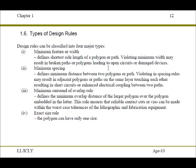The layout designer must follow the design rules to guarantee a certain yield for the fabricated microchip. The design rules from vendor A and vendor B are different, but the types of design rules, regardless of the manufacturer, tend to be the same. The four basic types are: the minimum feature or width, the minimum spacing rule, the minimum surround or overlap rule, and the exact size rule.